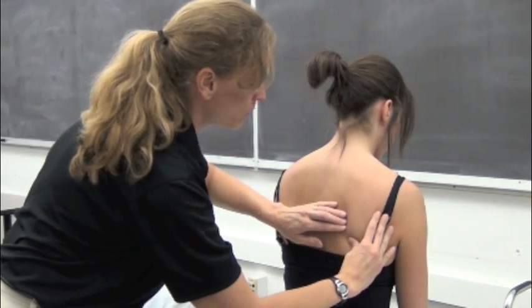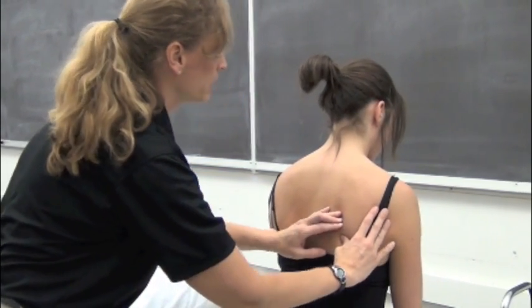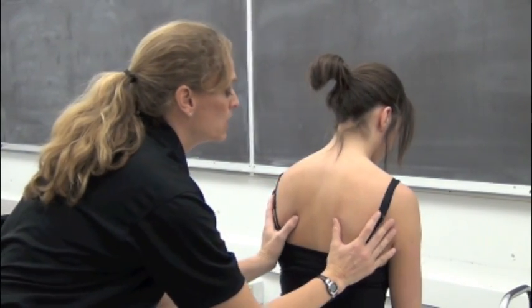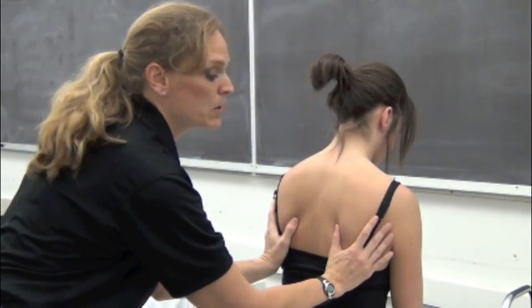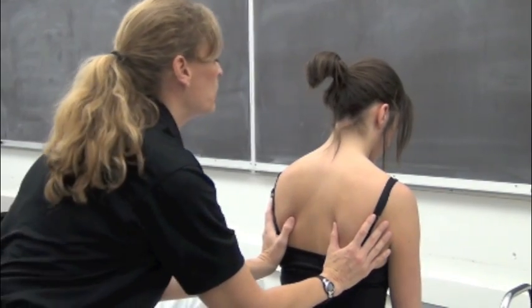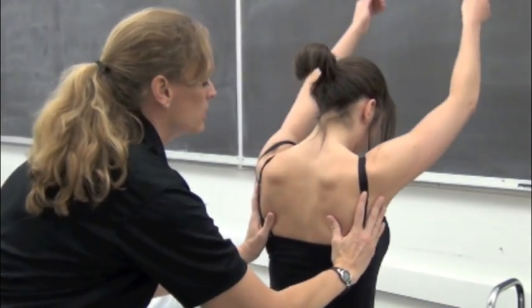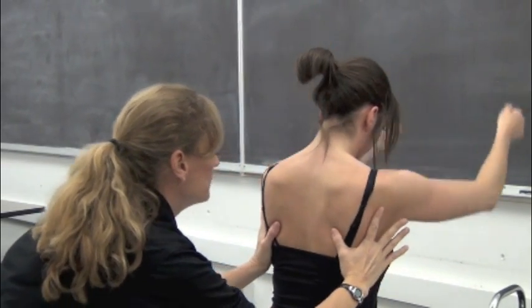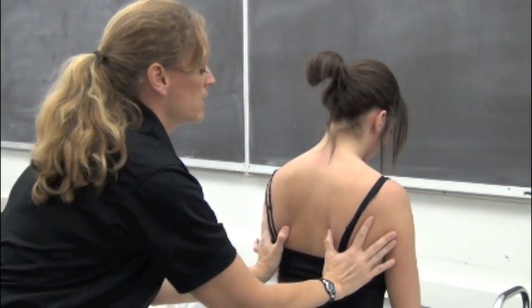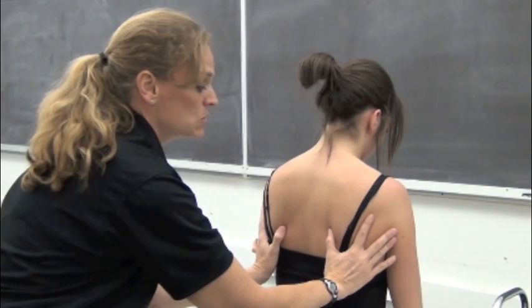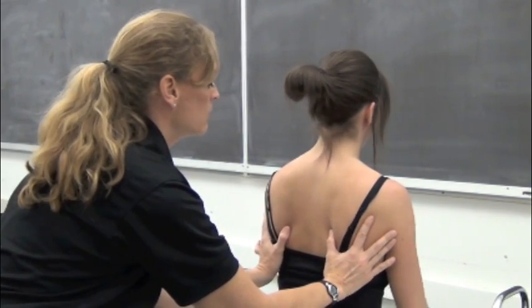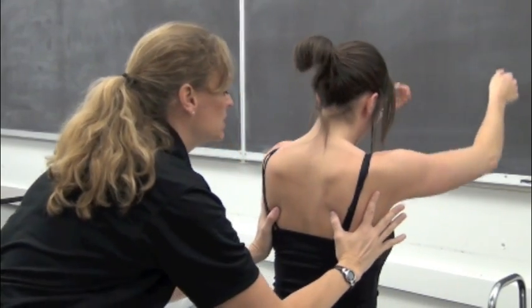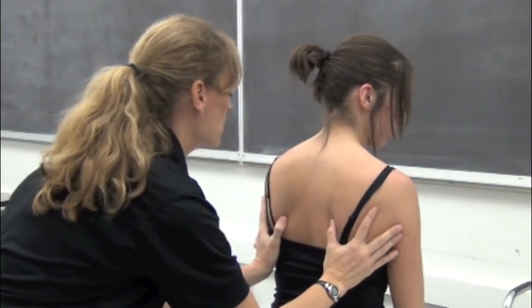Once you get along the medial border, you're going to get to the inferior angle of the scapula. Here you can look for symmetry of movement of the scapula with arm elevation — go ahead and lift both arms up overhead. This patient does not have symmetry of the scapula; we're getting increased elevation and upward rotation of the right scapula compared to the left.